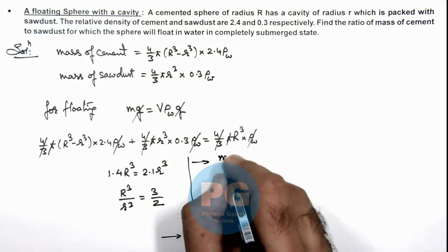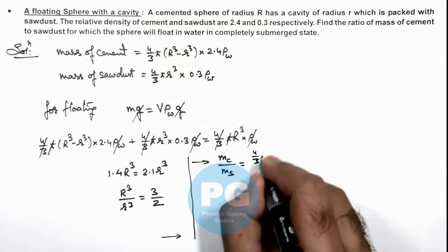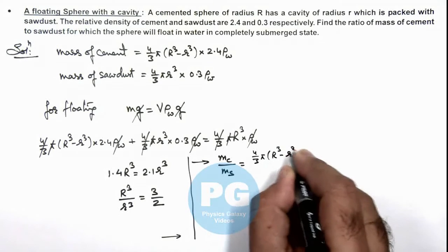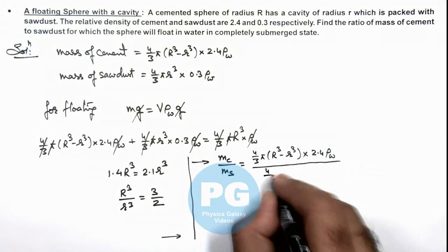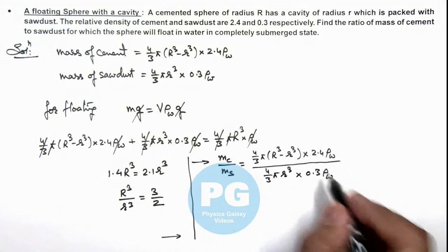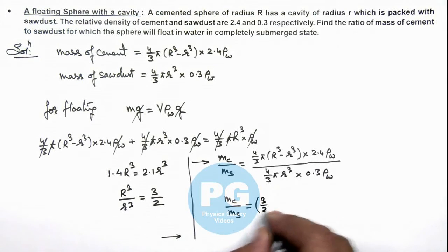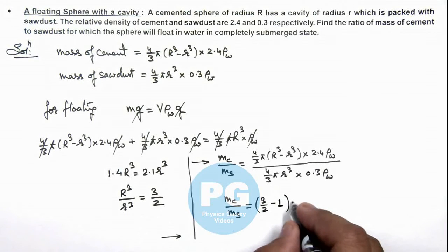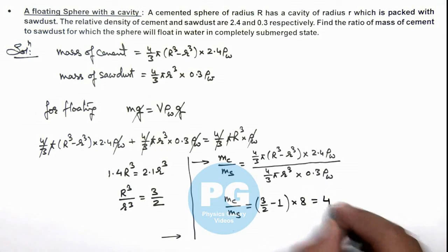The ratio of mass of cement to mass of sawdust, we can divide these two values. So that will be 4 by 3 π (R³ - r³) multiplied by 2.4 ρ water divided by 4 by 3 π r³ multiplied by 0.3 ρ water. Here 4 by 3 π ρ water all gets cancelled out. So this will give us mc by ms, mass of cement to that of sawdust, is equal to this R³ by r³, here we are having is 3 by 2, so this is 3 by 2 minus 1 multiplied by this 2.4 by 0.3 is 8, which comes out to be 4. That is the result of this problem.